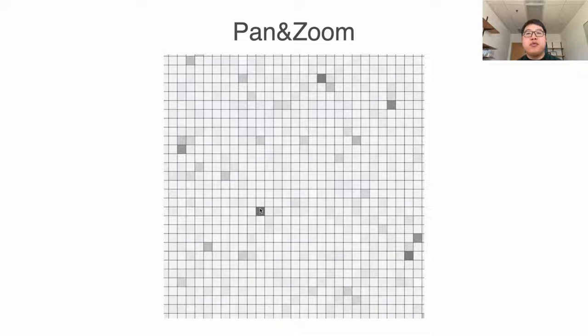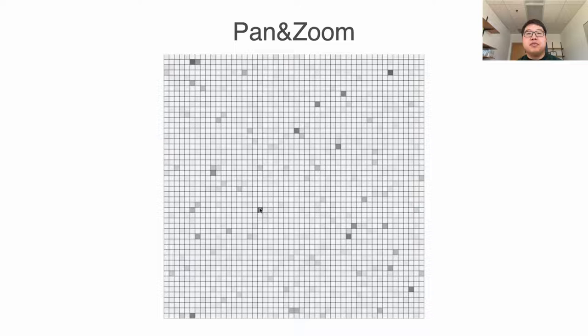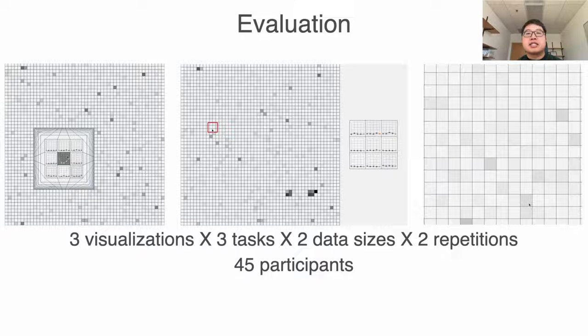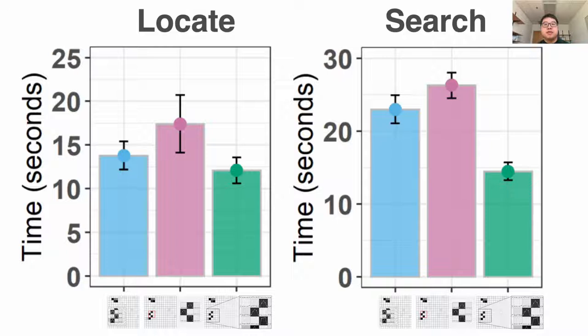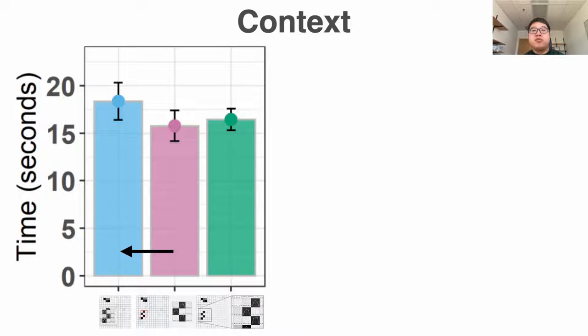We then ran another user study with the same tasks comparing the best performing lens from the first study to those two different techniques. In both the locate and search tasks, we found pan and zoom performed the best. The fisheye lens was also faster than the overview plus detail. Overall, pan and zoom had the best wayfinding and travel performance, which aligns with many other previous studies. In the context task, we found overview plus detail outperformed the fisheye lens and had a similar performance as pan and zoom.